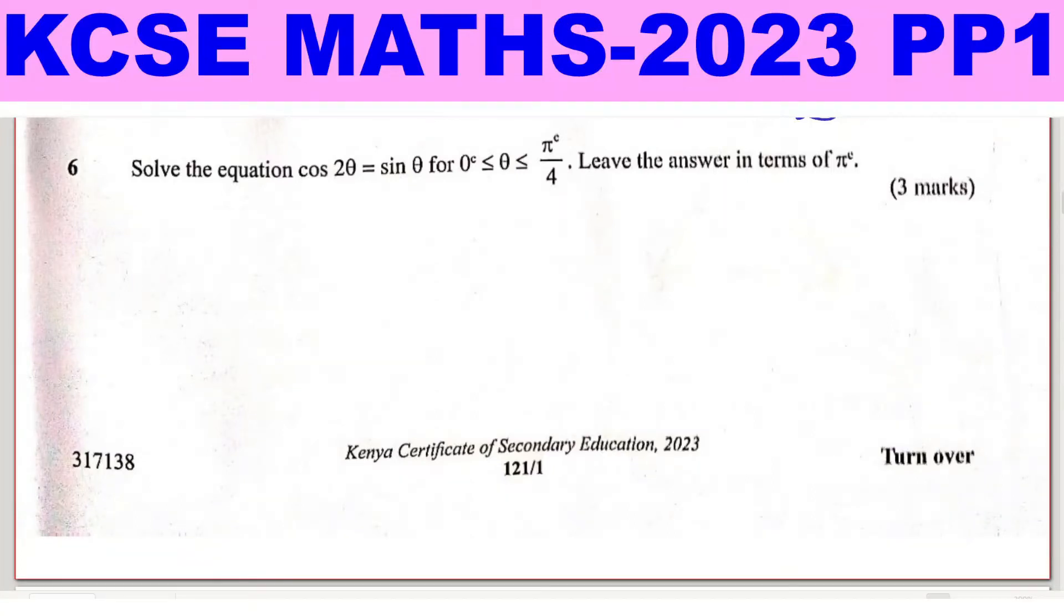Question 6. Solve the equation cosine of 2 theta equals sine theta for 0 ≤ θ ≤ π/4. Leave your answer in terms of pi radians.